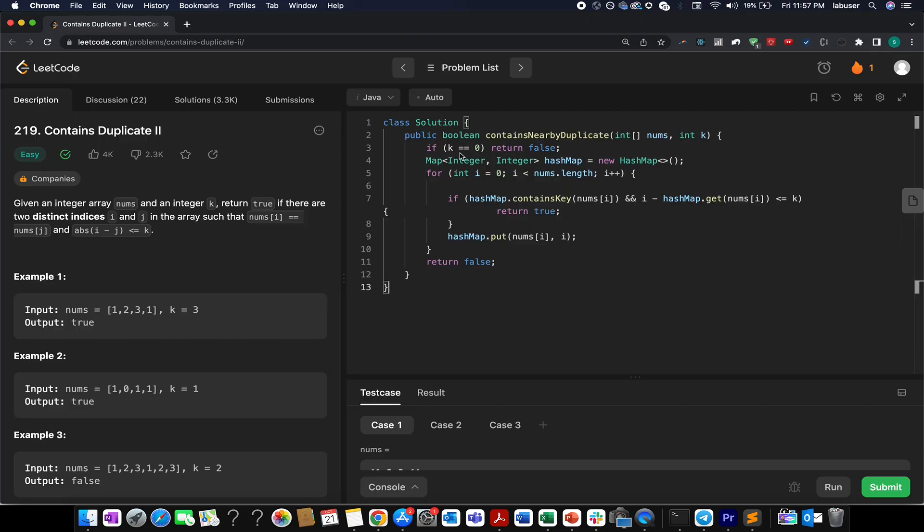In the first go, what do we do? We check what is the value of k. If it is equal to 0, we simply return false. Otherwise, we go ahead and create our hash map. We start the iteration from i equals 0 go up to i less than length. And with each iteration, we check if the element at nums[i] index already exists in my hash map.